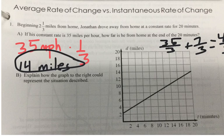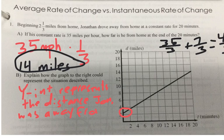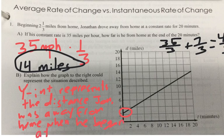Part B, explain how the graph on the right might represent the situation. Well, notice the y-intercept is at two and a third. So we could say the y-intercept represents the distance Jonathan was away from home when he began at time t equals zero.